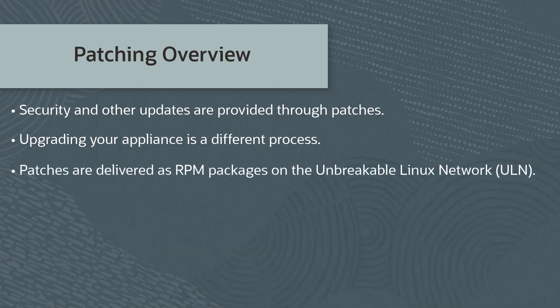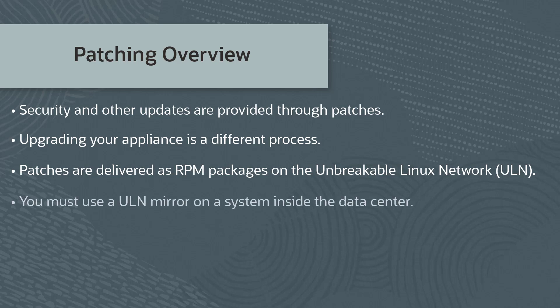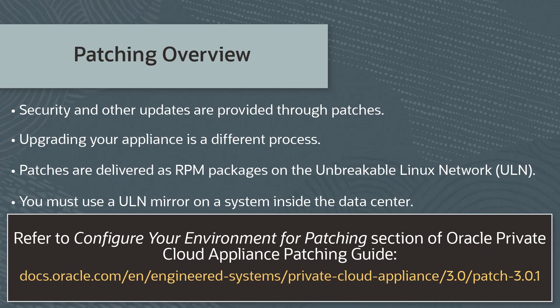Patches are delivered as RPM packages through a series of dedicated channels on the Unbreakable Linux Network, or ULN. Oracle Private Cloud Appliance is not allowed to connect directly to Oracle's ULN servers. Therefore, you must use a local ULN mirror on a system inside the data center. Creating a local ULN mirror and configuring your environment for patching is beyond the scope of this video. Refer to the Configure Your Environment for Patching section of the Oracle Private Cloud Appliance Patching Guide at the URL shown.